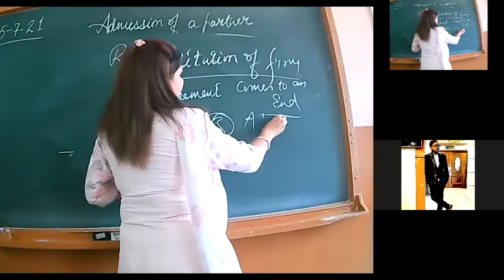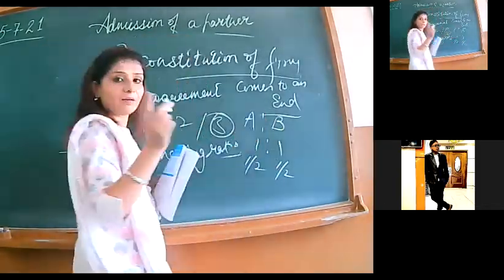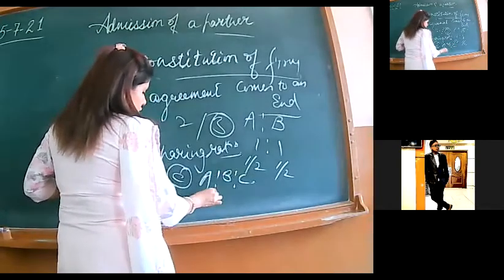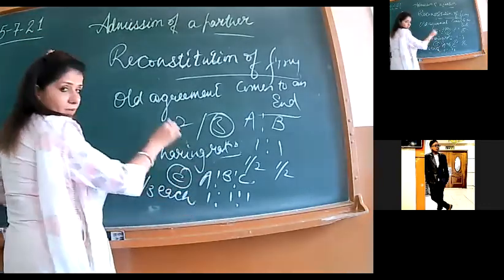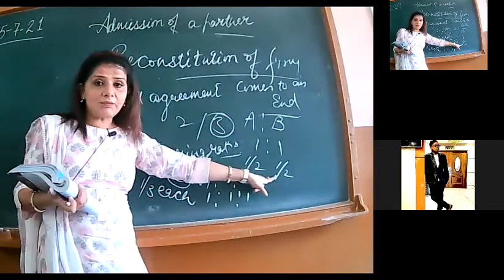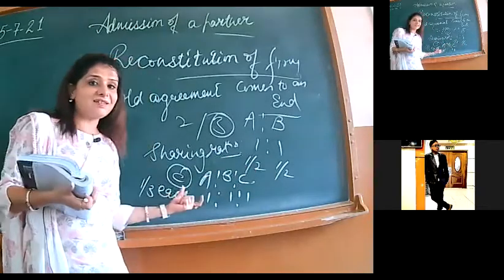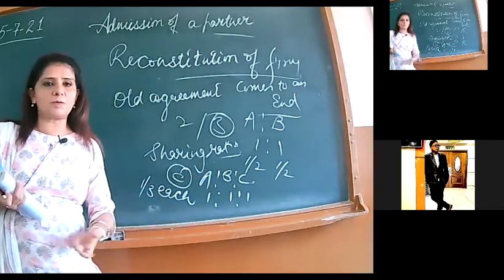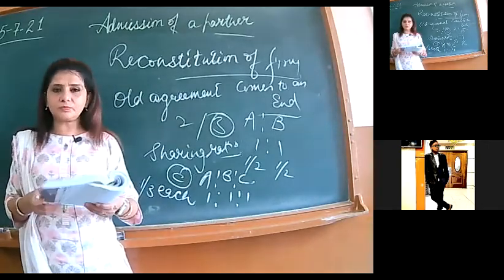Why is the new partner supposed to bring his share of goodwill at admission? In order to compensate the old partners, because they do sacrifice in favor of the incoming partner. For example, the old partners were A and B and their profit sharing ratio was one by two each. C has been admitted and they decided the new ratio is one is to one is to one, means one by three to each. So change happened. Earlier A got one by two, now A will get one by three. Their earlier share was greater than the new share. In that case, we will be calculating their sacrificing ratio.